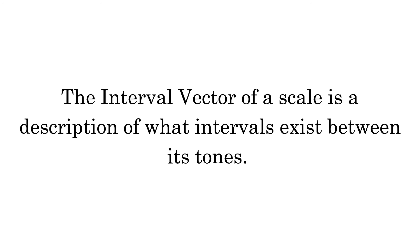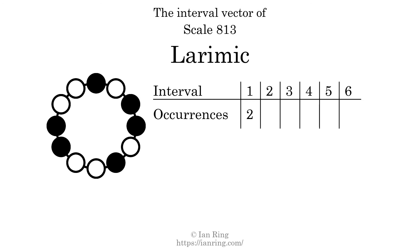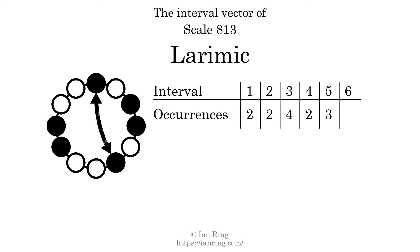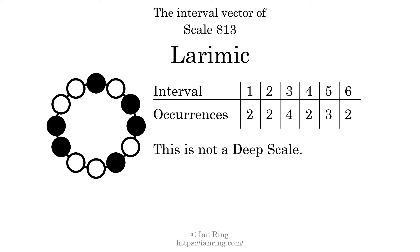The interval vector of a scale is a description of what intervals exist between its tones. There are 2 intervals with the size of 1 semitone, 2 intervals with the size of 2 semitones, 4 intervals with the size of 3 semitones, 2 intervals with the size of 4 semitones, 3 intervals with the size of 5 semitones, and 2 intervals with the size of 6 semitones. Each interval does not appear in this scale a unique number of times, so this is not a deep scale.